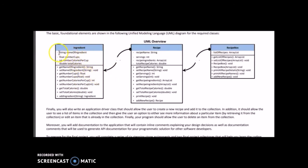For the ingredient class, make sure you have all the different variables and getter and setter methods, along with the add ingredient method — using the exact same input parameters and return types as specified. Same with the recipe class: make sure you have the recipe variables, all getter and setter methods, and the two custom methods. Same with the recipe box class: make sure you have the instance variable, getter and setter methods, all custom methods, and the correct constructors for each class.